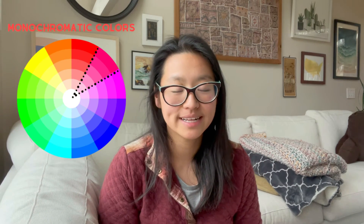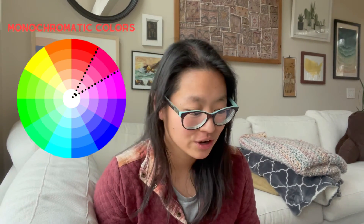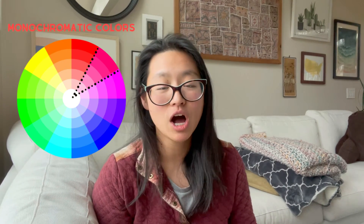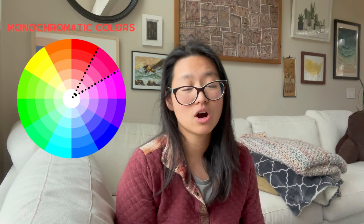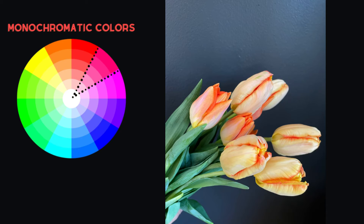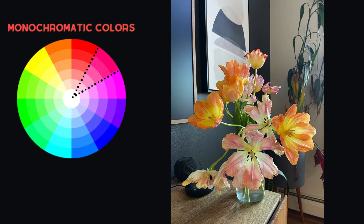In this next category we have monochromatic colors — meaning the same color. Monochromatic colors use shades of the same color. In this case we have two varieties: Apricot Parrot, which a lot of people grow, and a variety called Sunrise Dynasty in the top left. This one looks very cohesive — it's just very peachy, and they turn a little more pink but they all turn pink together, which is really cool.